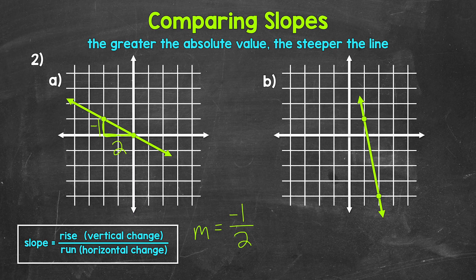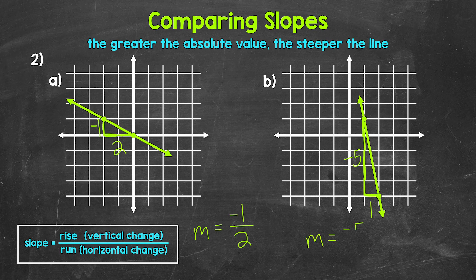Let's move on to line B, starting with the rise. We need to go down five units, and since we went down, this is negative — the rise is negative five. For the run, we go over one unit to the right, so the run is positive one. The slope of line B is negative five over one, which we can also write as just negative five.